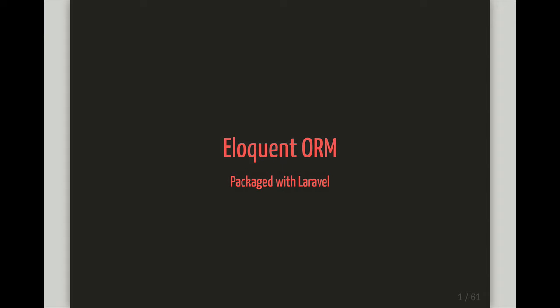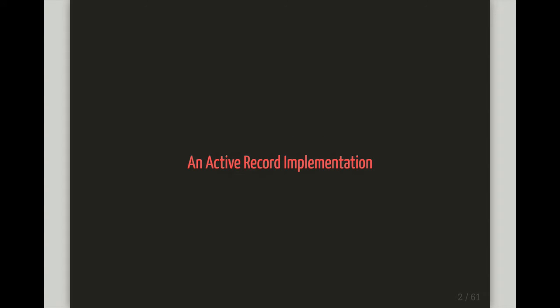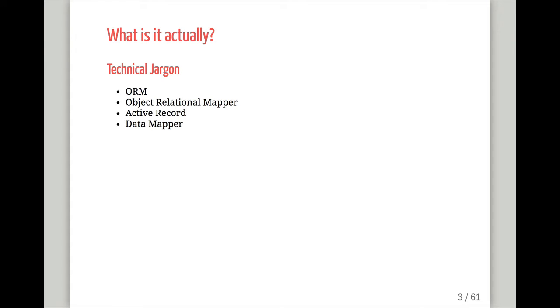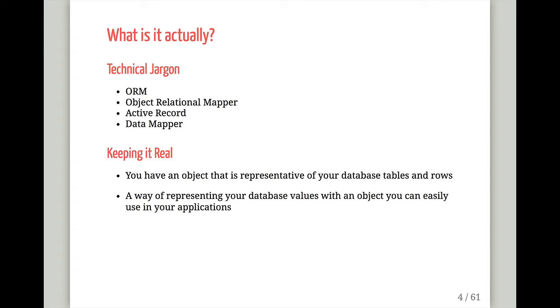To start off, Eloquent is an active record implementation. In the simplest terms, think of it as: one row in the database equals one object in your application. It's an ORM, which stands for object relational mapper. There's active record, which is the Eloquent style, and there's also data mapper, which is a slightly different implementation. Ultimately, the differences are minimal and more about preference.